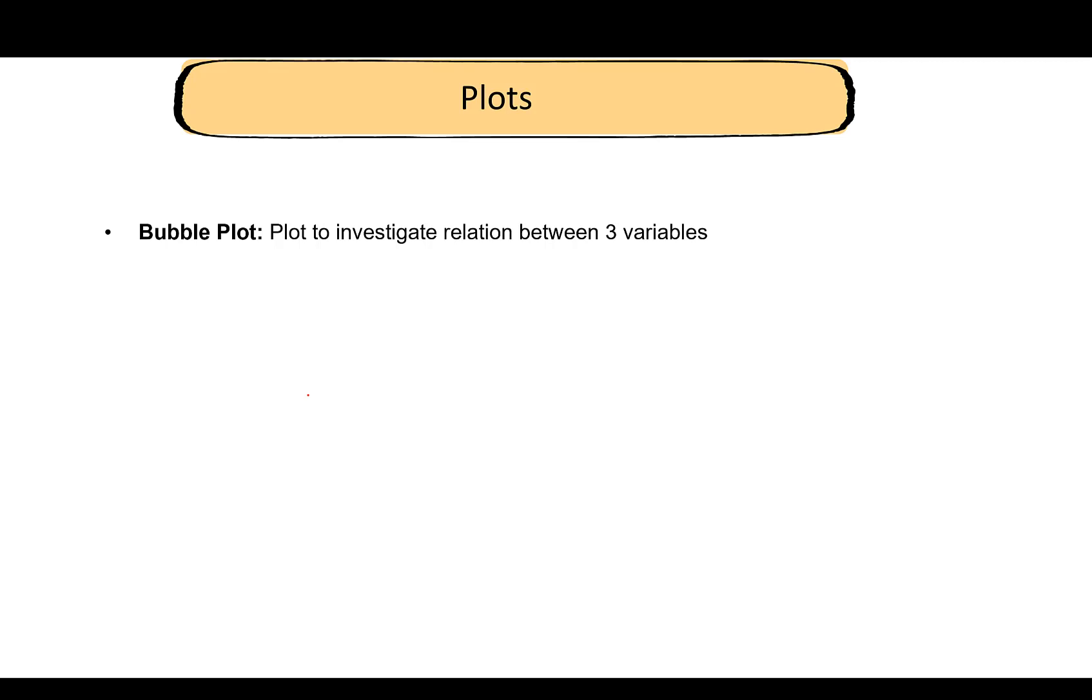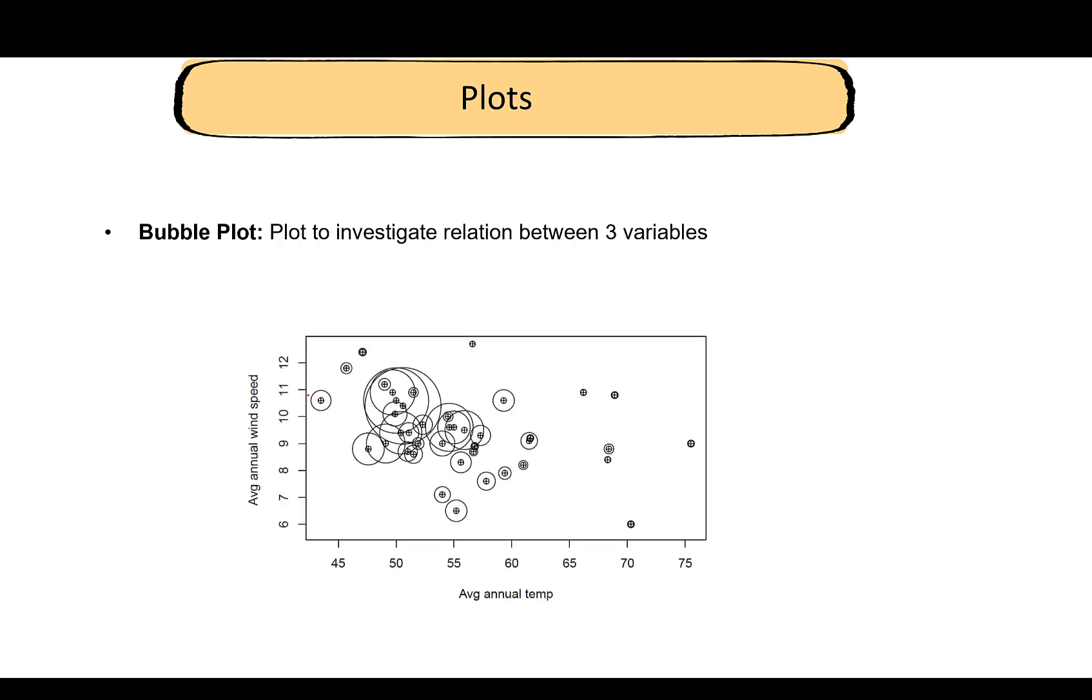Through bubble plot, it is possible to investigate relationship between three variables at a time. This is how a bubble plot looks like. On the y-axis I have the wind speed, on the x-axis the temperature level. These bubbles indicate the amount of SO2 levels.